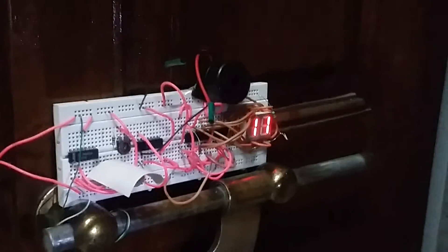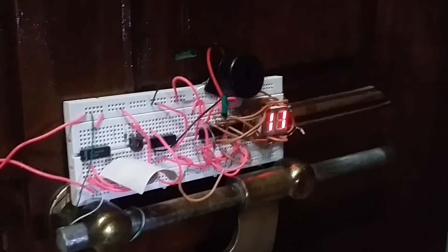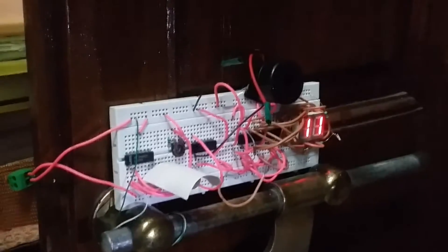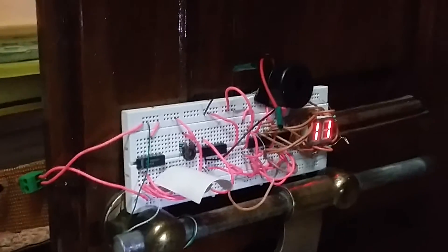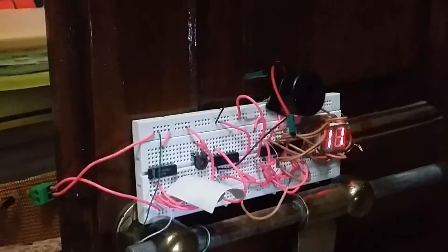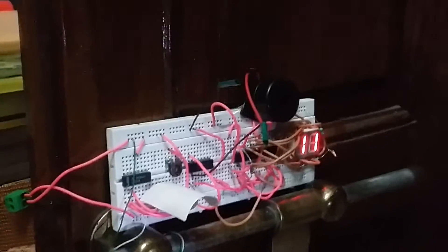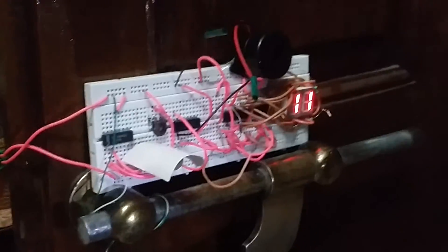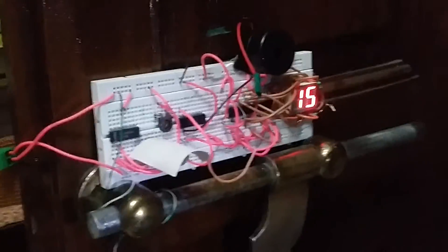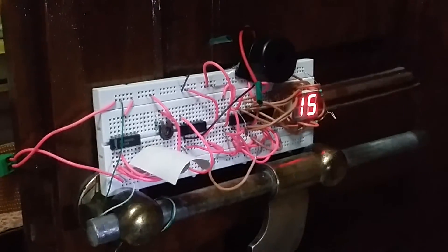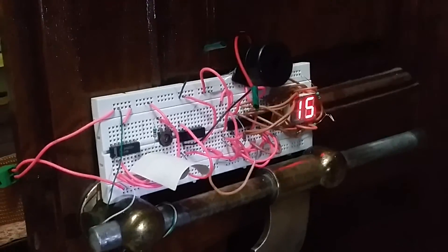There are two CD4033 ICs which are seven-segment display encoders. The output of the NOT gate goes to the buzzer and to the input of the counter circuit. This counter circuit consists of the two seven-segment display encoders and the two seven-segment displays. So this is all about this door sensor.